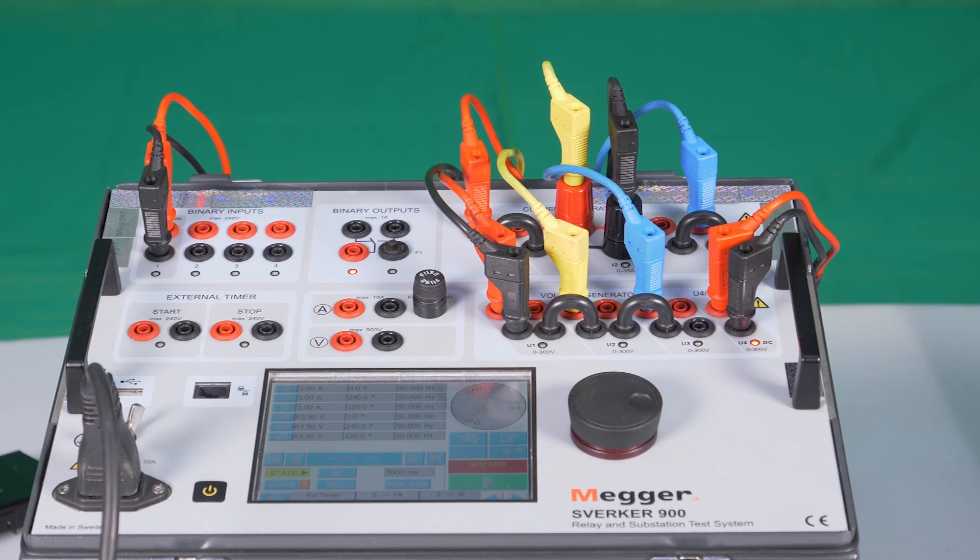Video 14: State Sequencer Application Example with Overvoltage. We are going to create an overvoltage condition in an ABB MAKE REL670 relay.